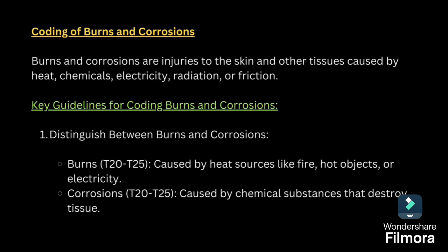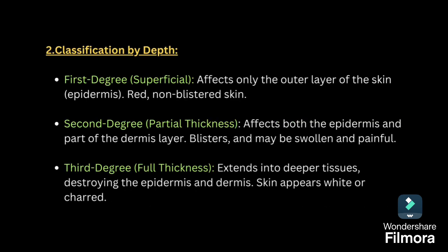Burns happen because of fire, hot objects or electricity, and corrosion happens because of chemicals. Classification by depth: whenever coding for burns, first we have to know about the depth — whether it is first degree, second degree or third degree burn. First degree burn is erythema formation, second degree is blister formation, and third degree is full thickness burn.